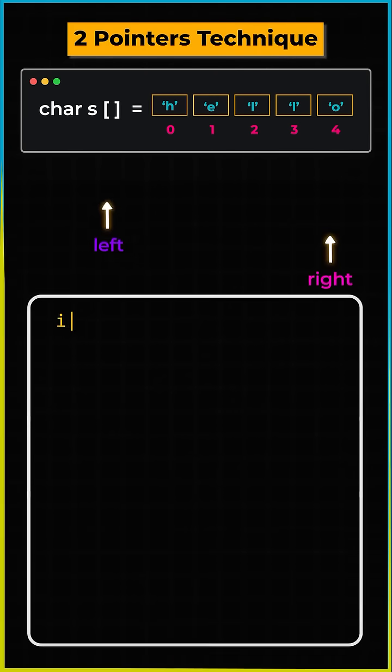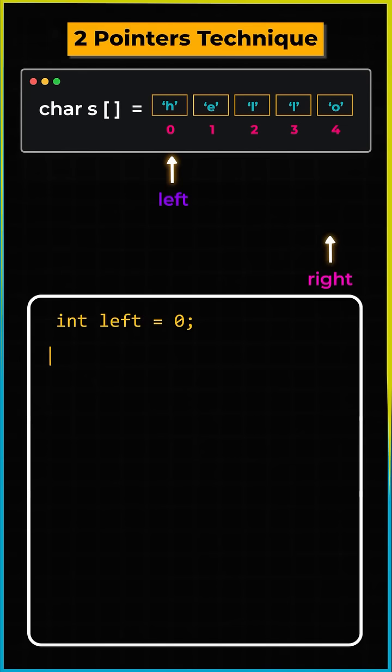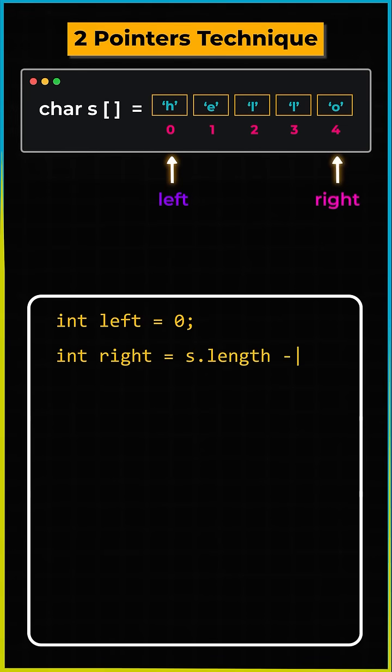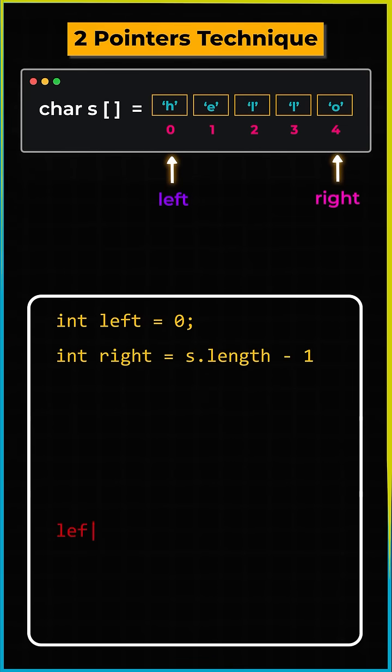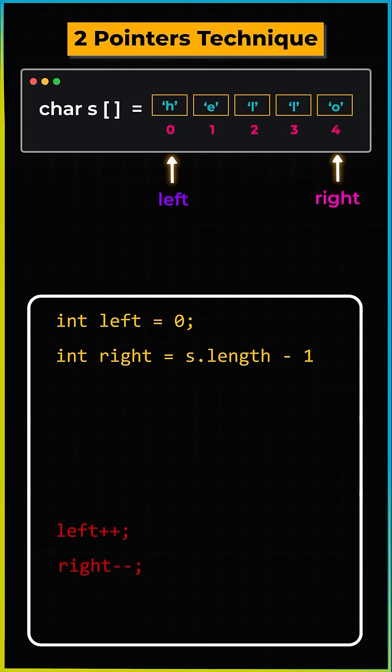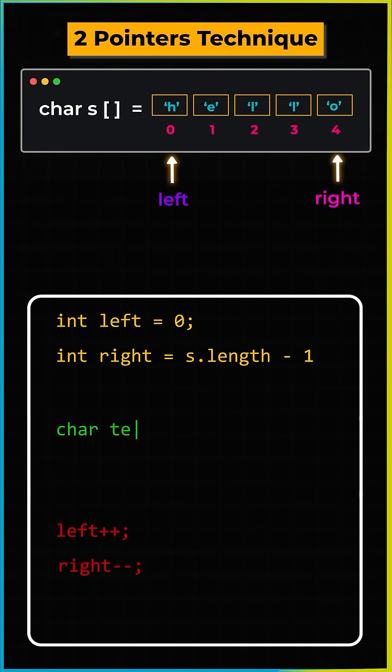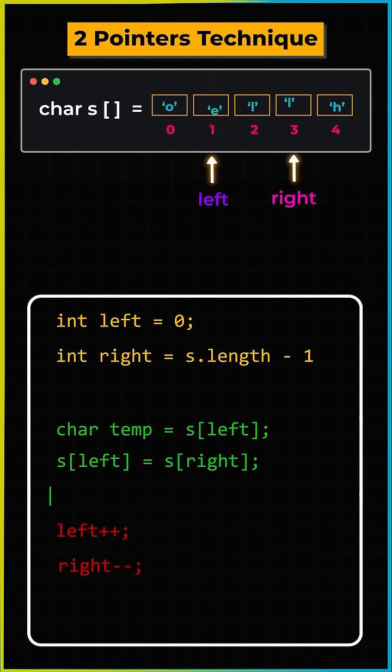Left is going to be initialized to point to zero index, right is going to be initialized to point to the last index of the array and they both will be moving towards each other. As they are traversing their values will be swapped.